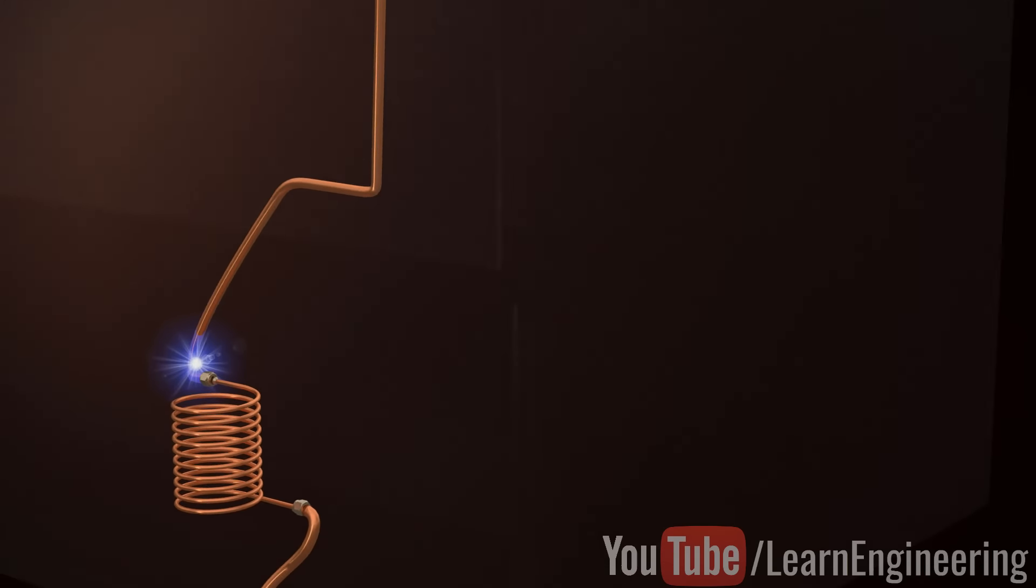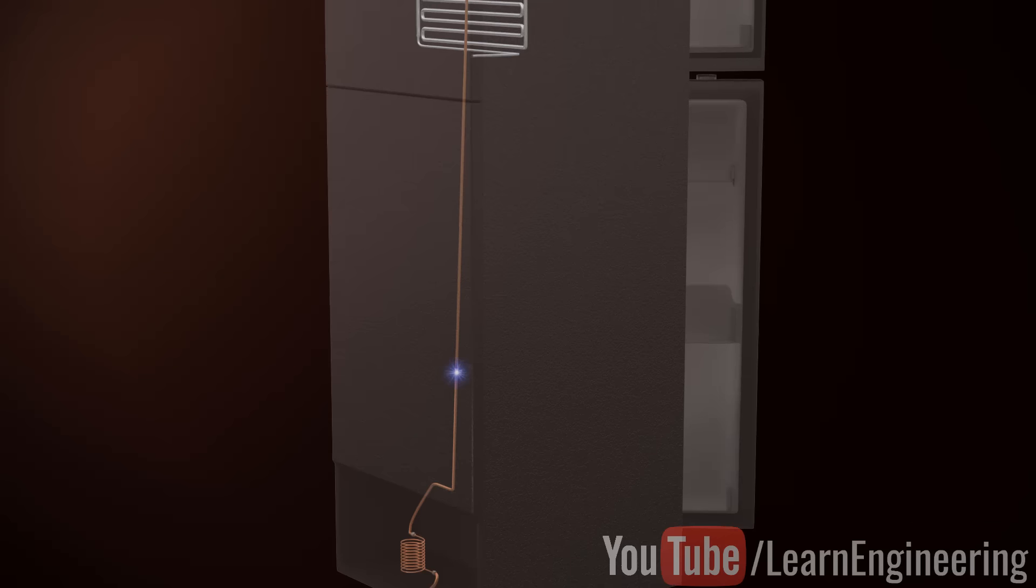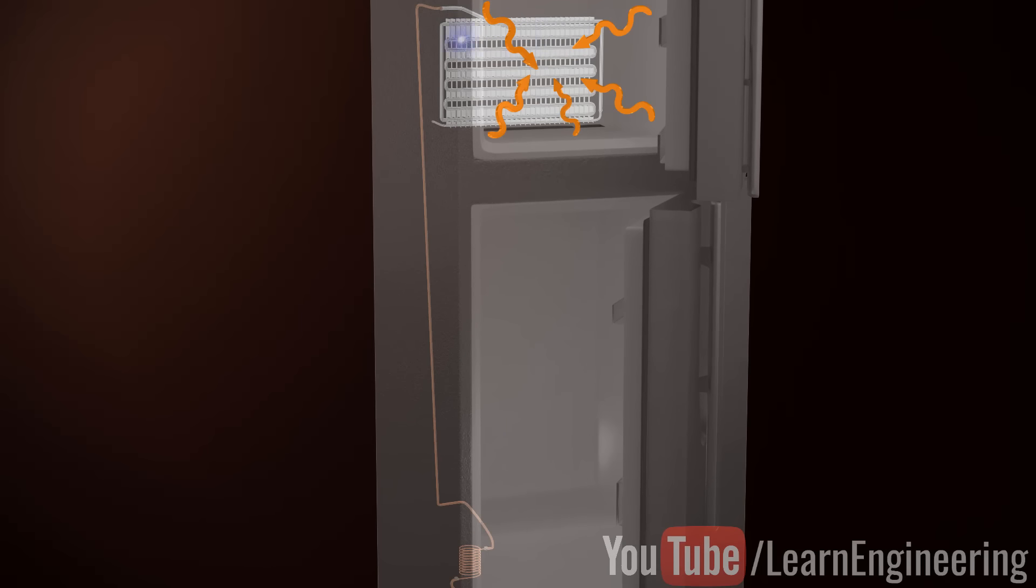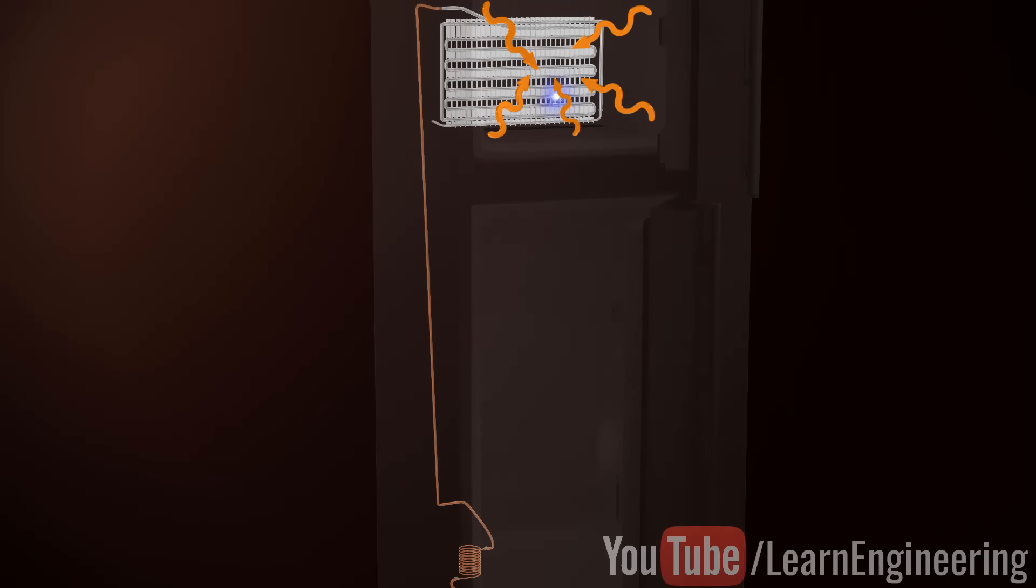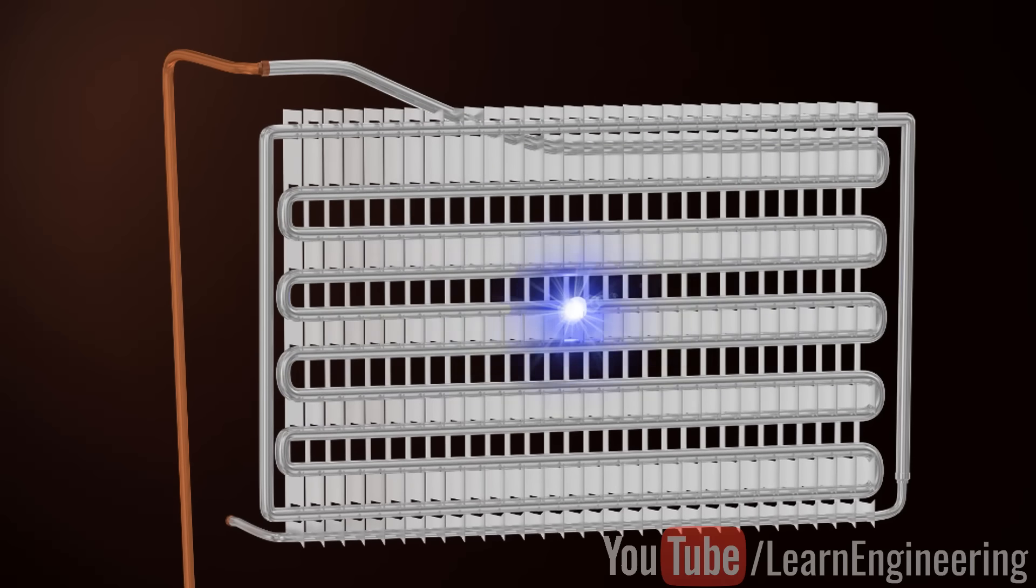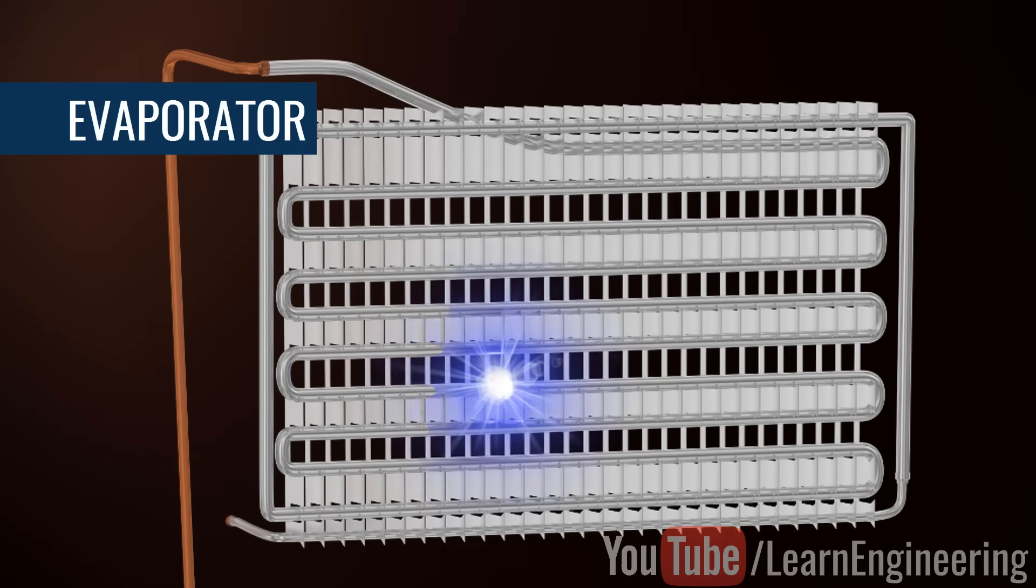The next phase is simple. Just pass this cold liquid over the body which is to be cooled. During the heat absorption process, the refrigerant further evaporates and transforms into pure vapor. Since there is phase change during this process, the refrigerant temperature does not increase. This heat exchanger is called the evaporator.